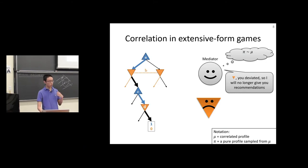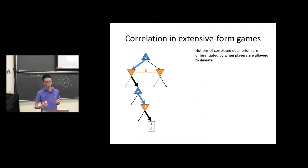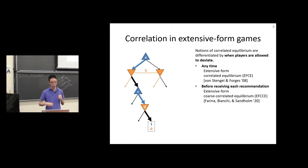We're going to be working with several different notions of correlation. The different notions are defined by when players are allowed to deviate. The notion I just introduced is called the extensive form correlated equilibrium. In an extensive form correlated equilibrium, the agents are allowed to do whatever they want. They can deviate whenever they want, before or after listening to messages. This was introduced by von Stengel and Forges in 2008. Now we can restrict when agents are allowed to deviate to get coarser notions of equilibrium.